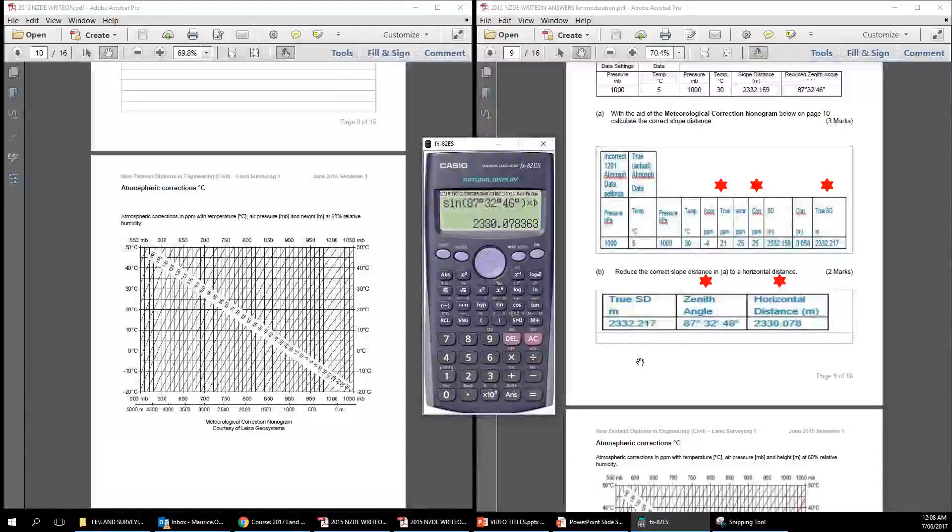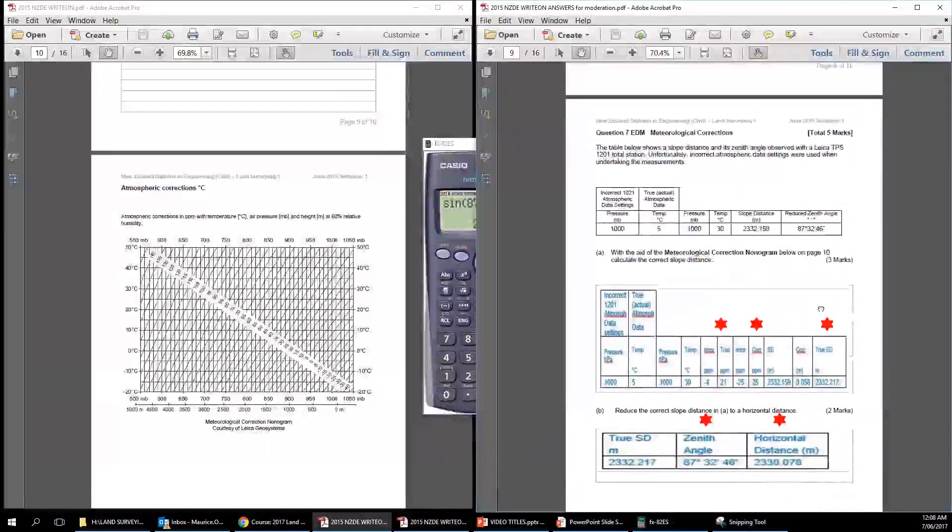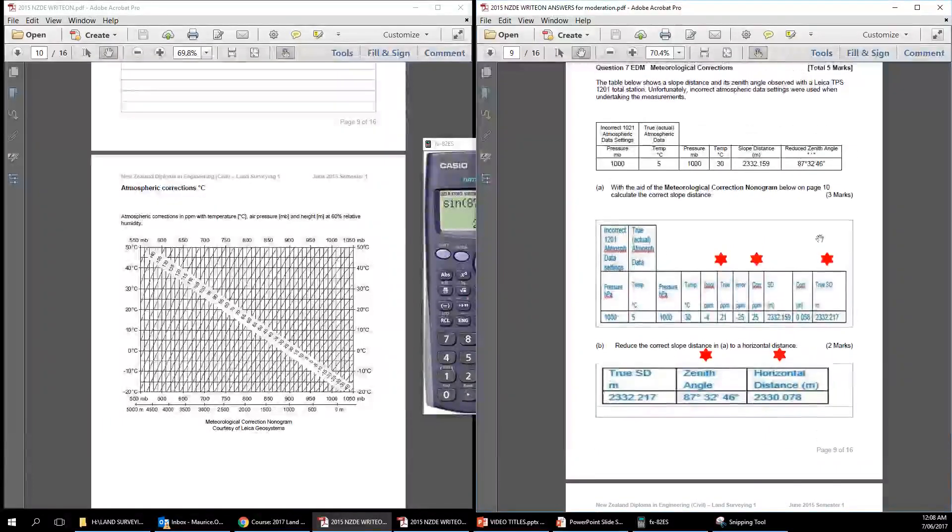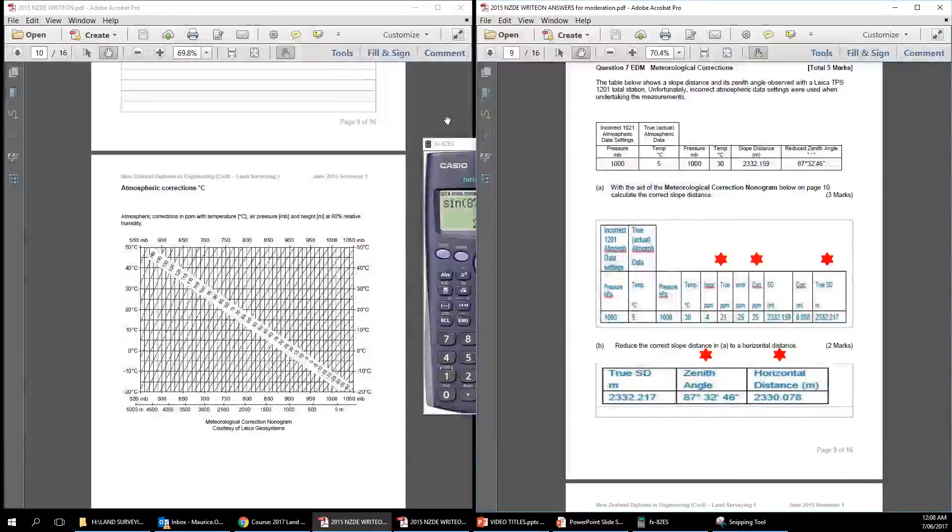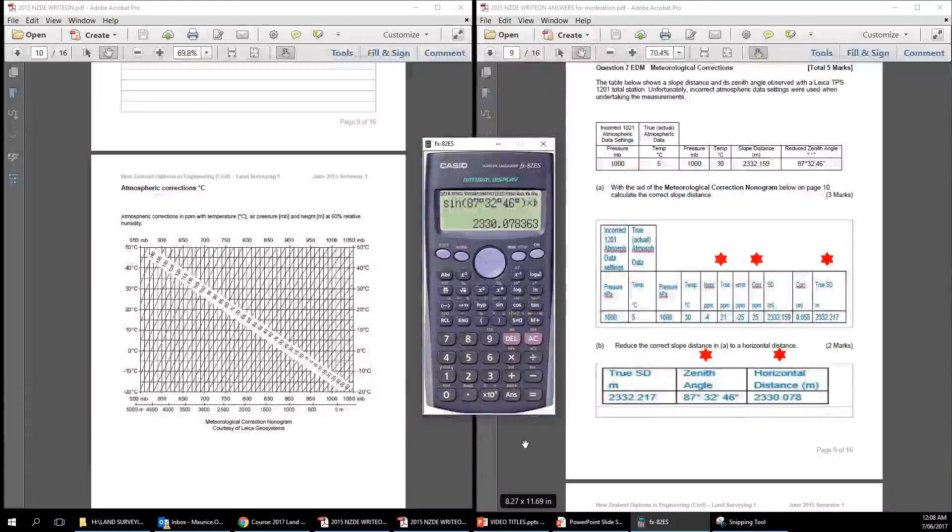So sometimes we need to have an expectation of the answer, and that'll give us an idea. So it's sine of the zenith angle times the slope distance will give us the horizontal distance. So there you are. There's that question there. Pretty well done. Just to recap on that one.